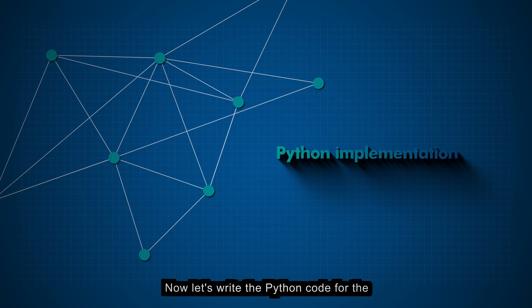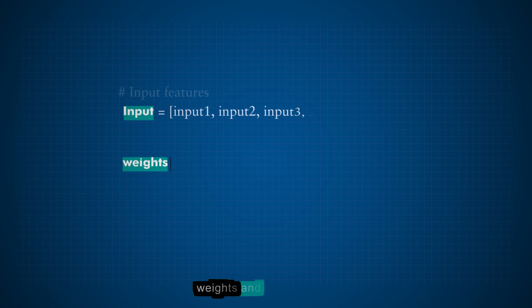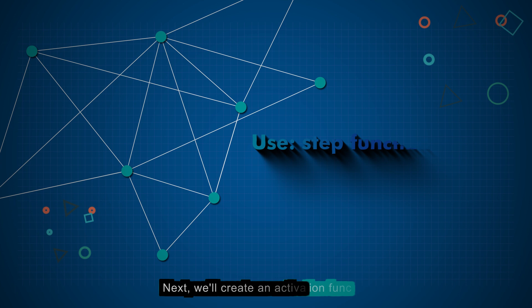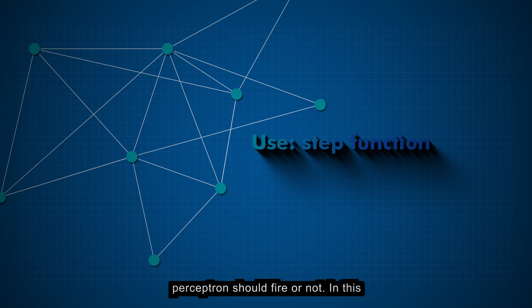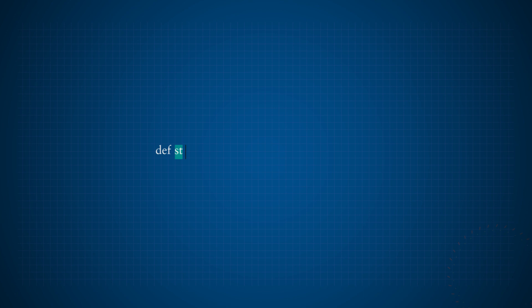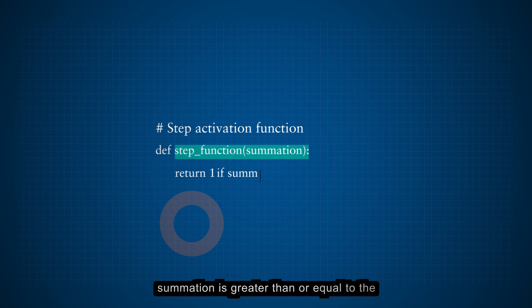Now, let's write the Python code for the Rosenblatt perceptron. First, we'll define the necessary variables: inputs, weights, and the threshold. Next, we'll create an activation function to make the decision on whether the perceptron should fire or not. In this case, we'll use the step function. The step function takes the summation, weighted sum of inputs, as input. If the summation is greater than or equal to the threshold, it returns 1, otherwise, it returns 0.